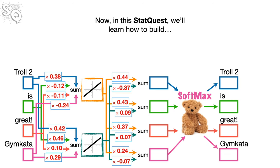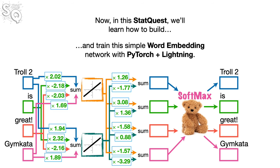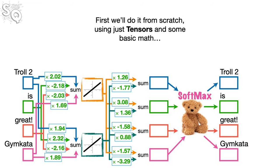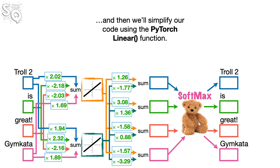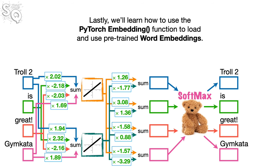Now, in this StatQuest, we'll learn how to build and train this simple Word Embedding network with PyTorch plus Lightning. First, we'll do it from scratch using just tensors and some basic math. Then we'll simplify our code using the PyTorch linear function. Lastly, we'll learn how to use the PyTorch Embedding function to load and use pre-trained Word Embeddings.